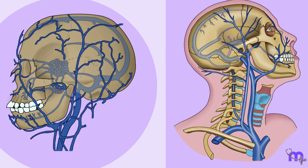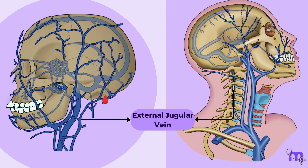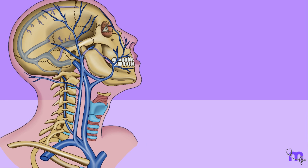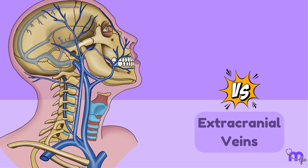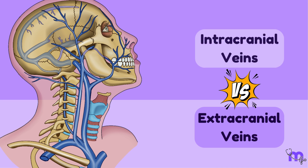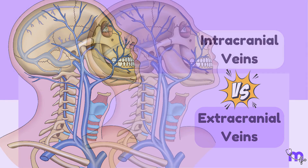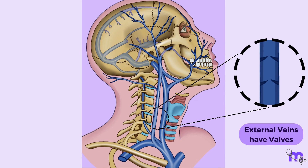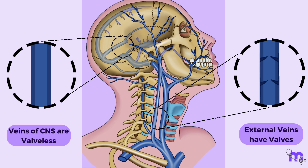In contrast, the external jugular vein only drains a portion of the extracranial tissues. Before we continue, let us understand the key difference between the veins outside the skull and those inside the skull. The external veins have valves, but the veins of the central nervous system are valveless.